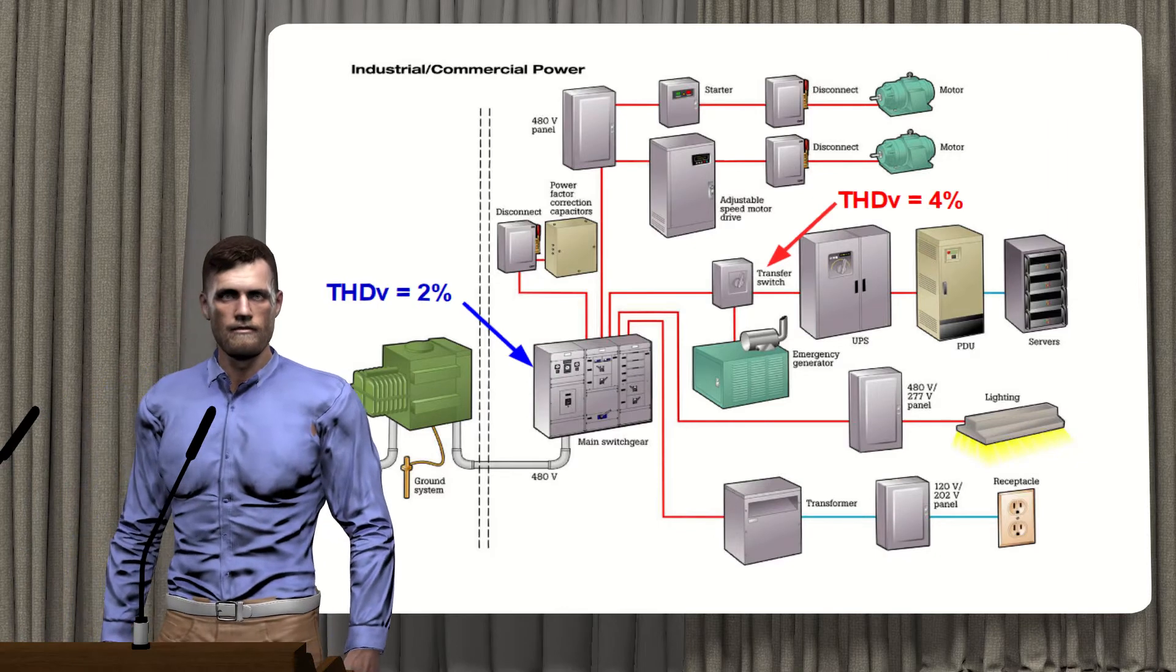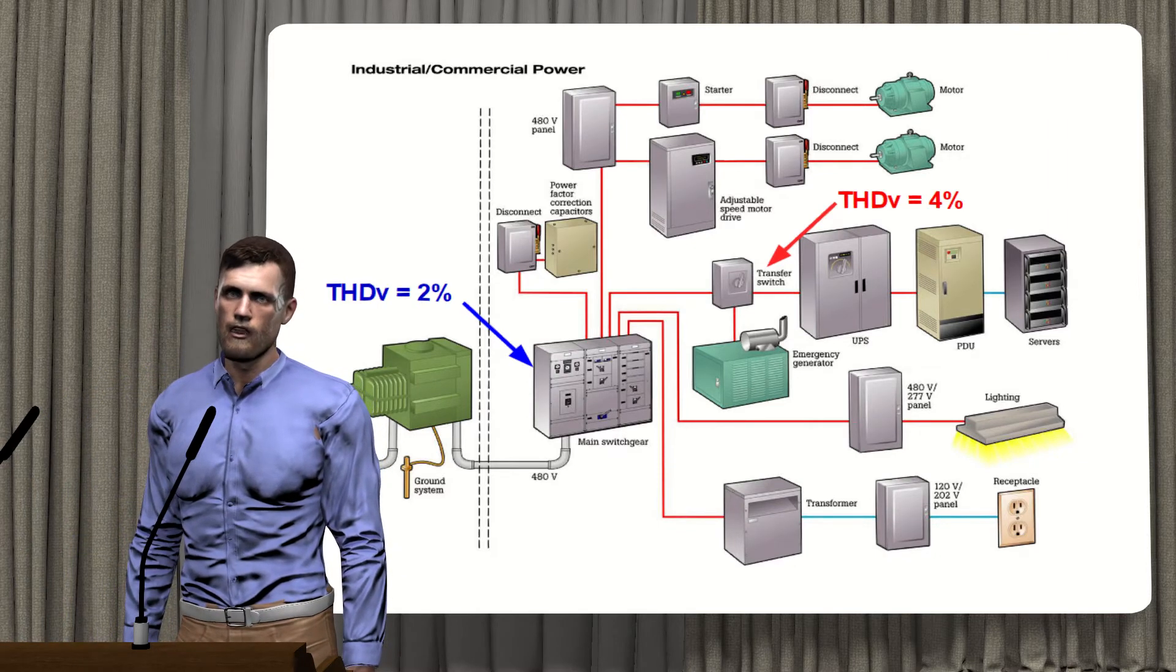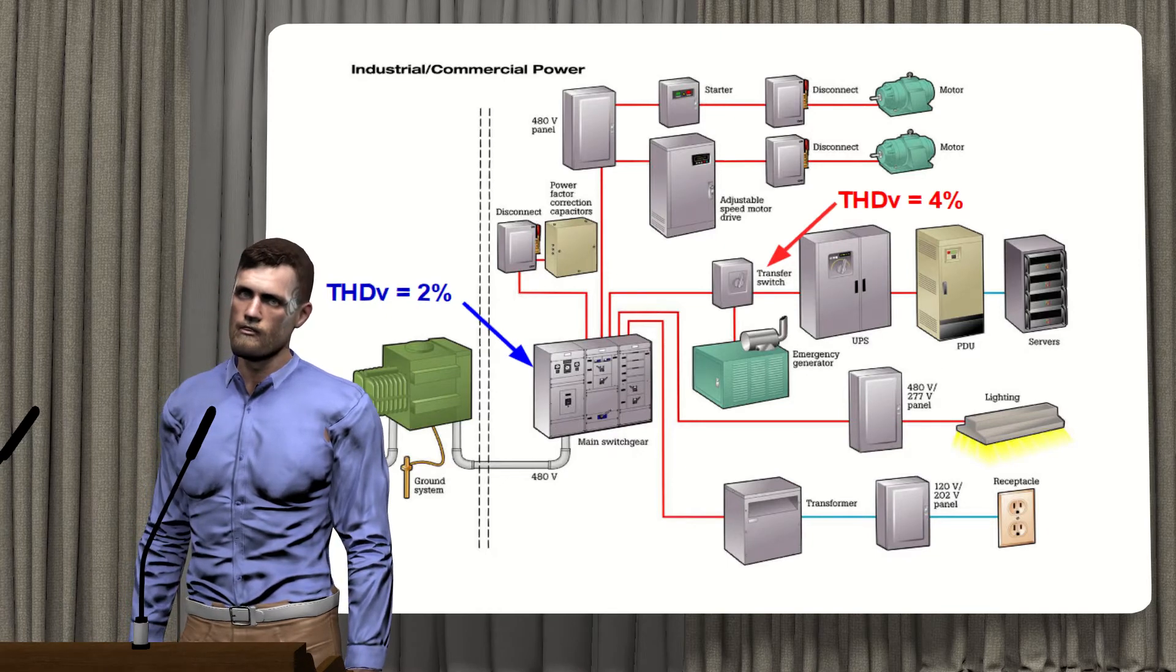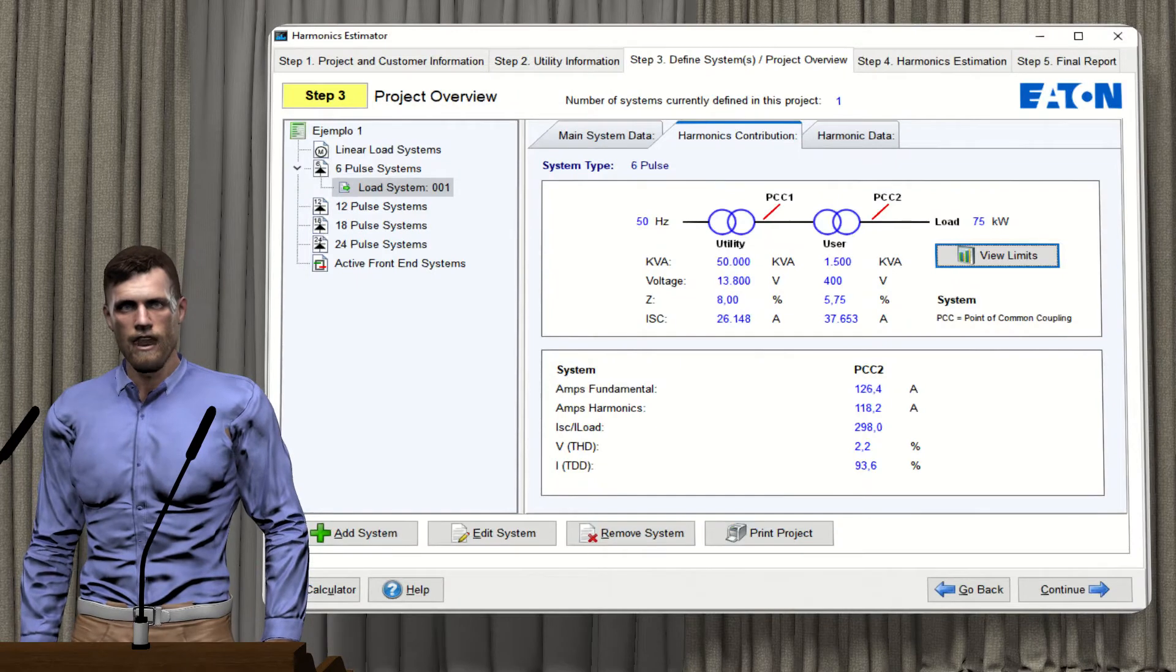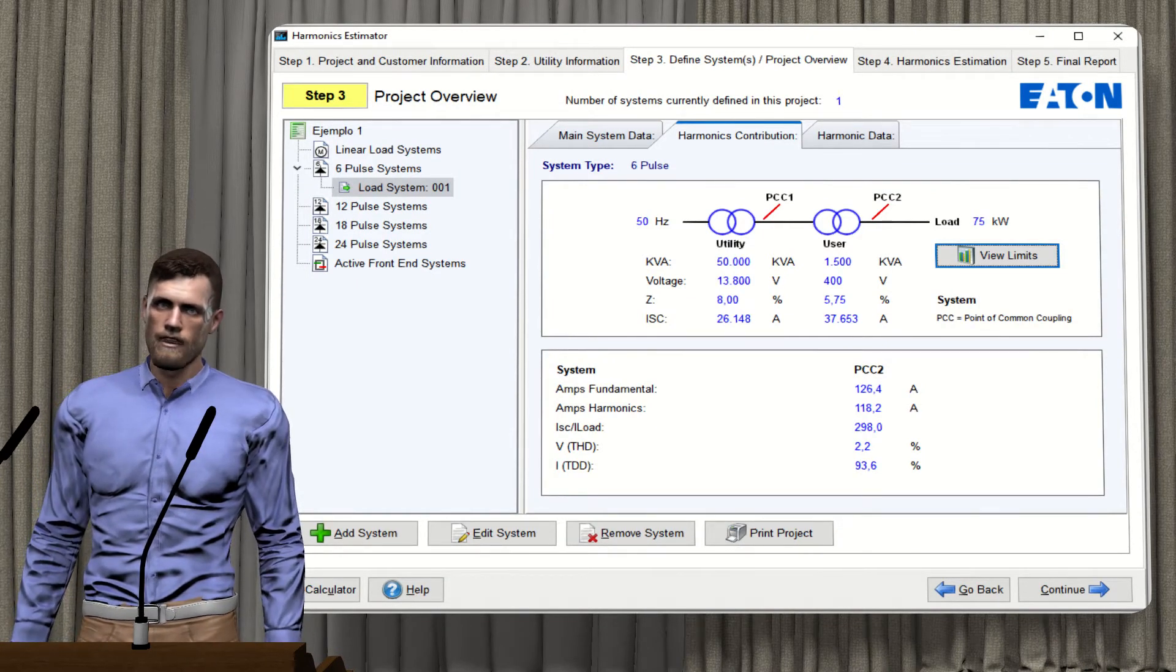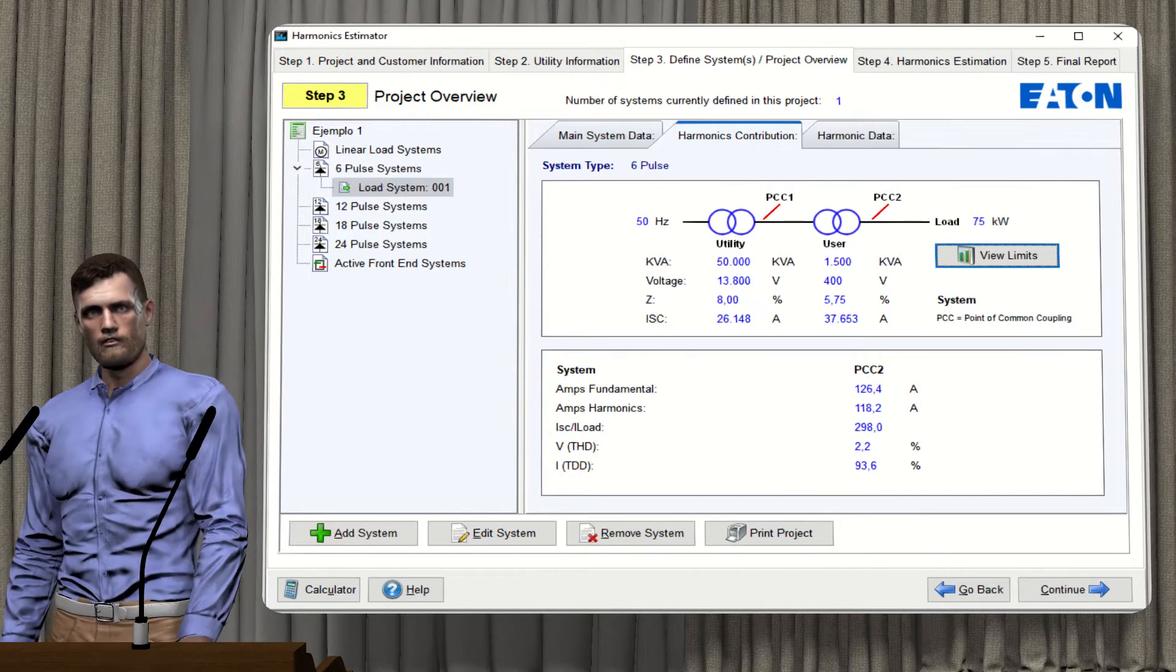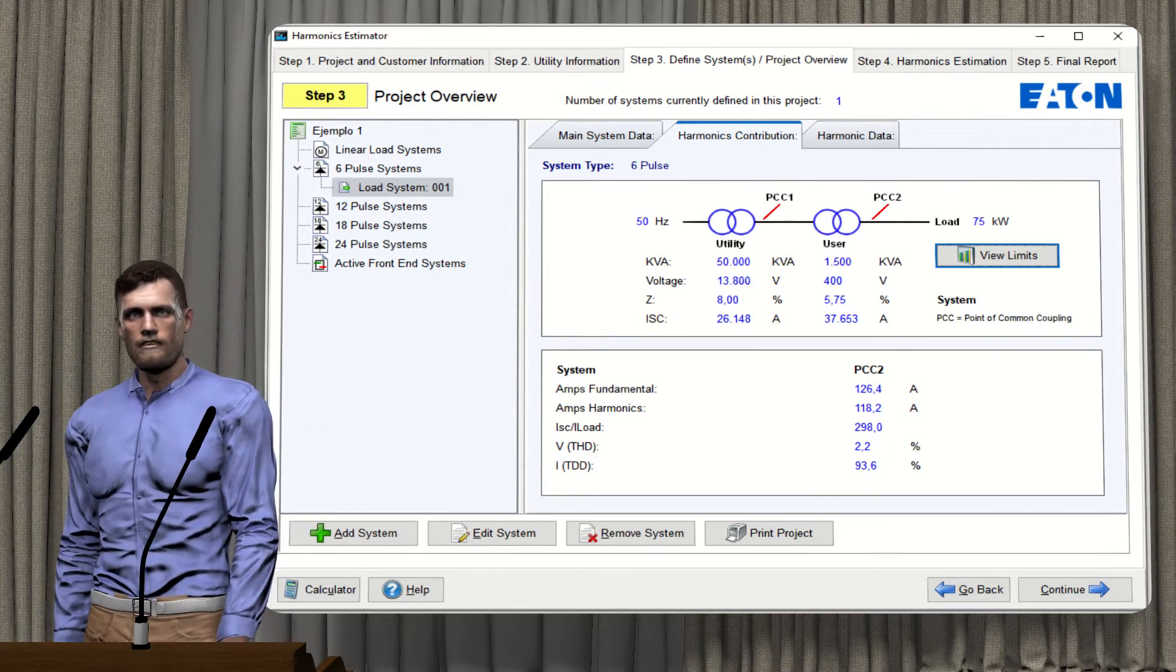For the current, the value provided by the THD can be very different depending on the type of loads that we consider. Here we can see the voltage and current THD associated with a variable speed drive with a 6-pulse input rectifier stage, provided by this harmonic calculation software. We would be talking about values around 2% for voltage and around 93% for current.